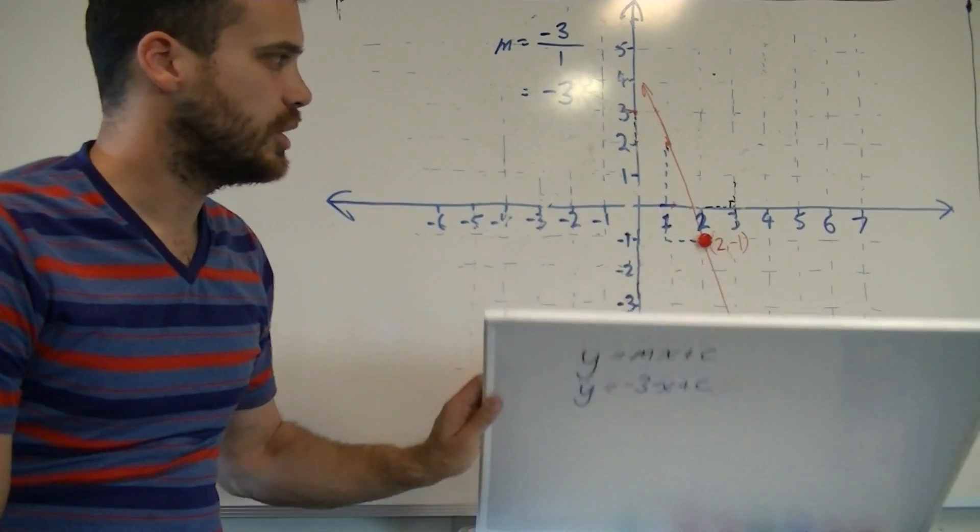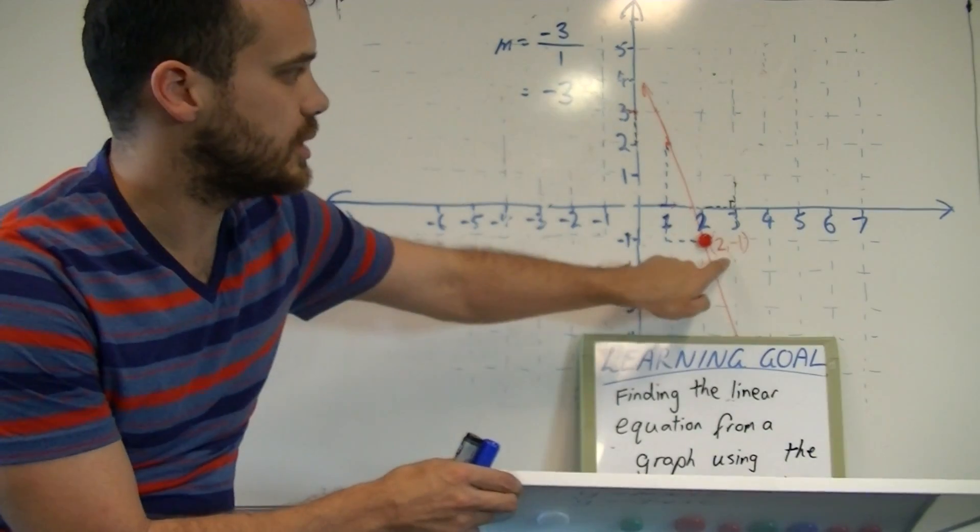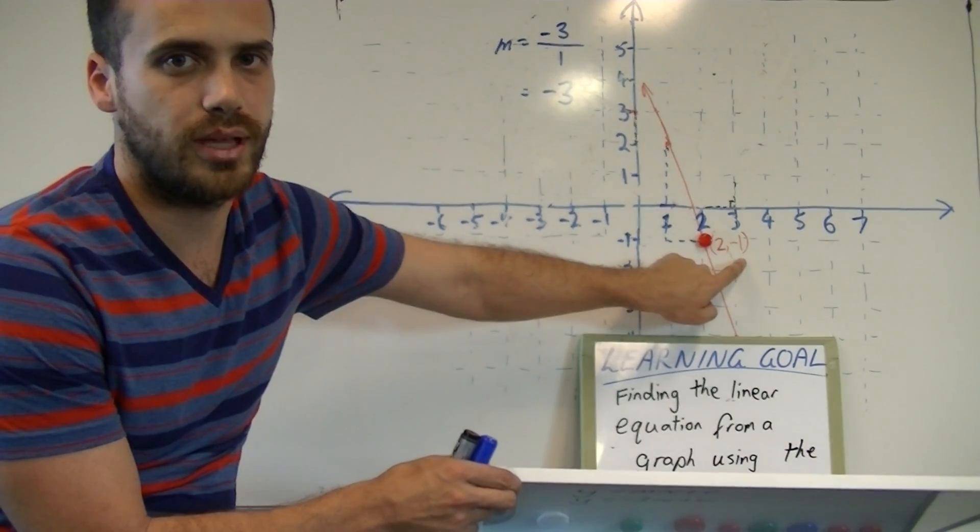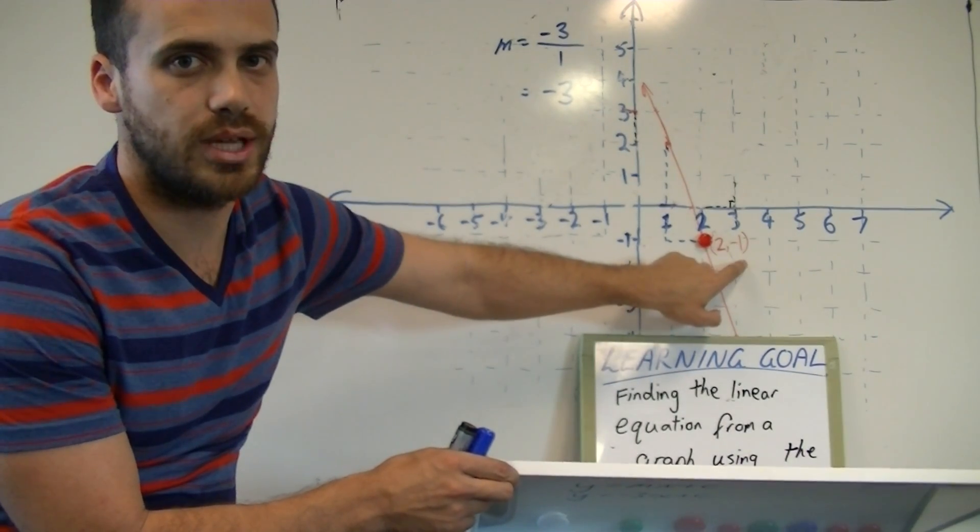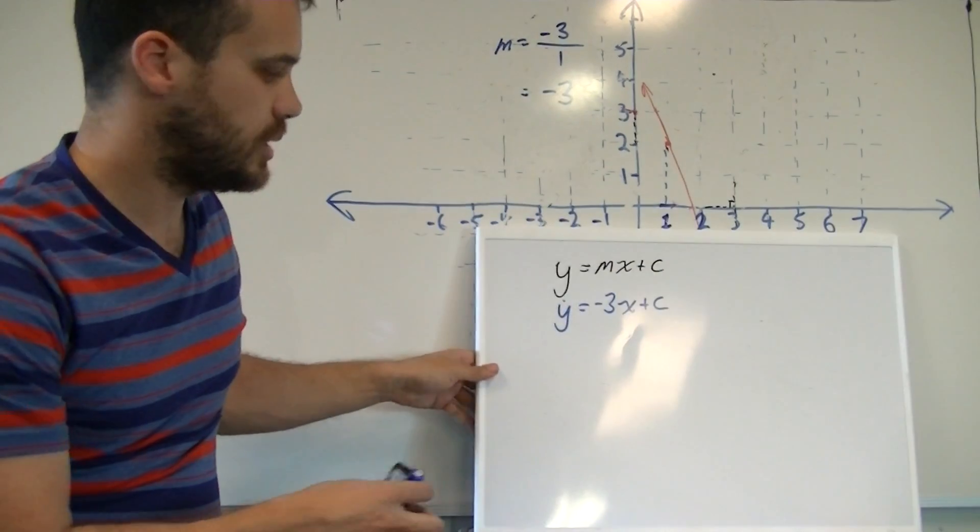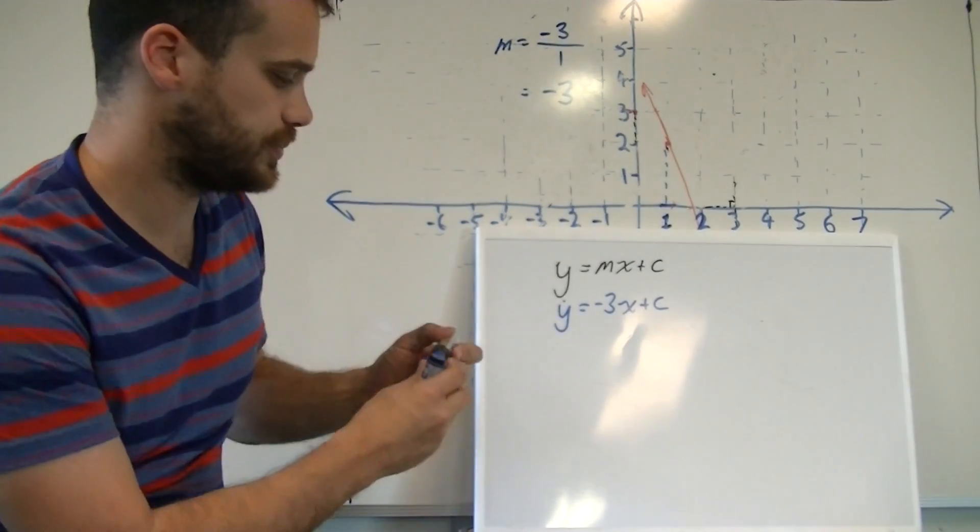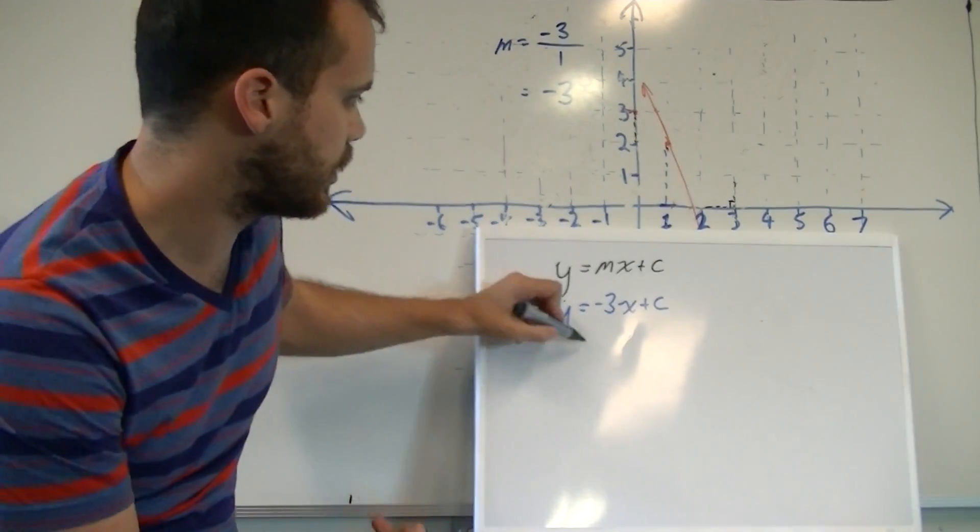We can't go to the c value directly because we don't know what our y intercept is. We do, however, know that one of the points is 2, negative 1. That means that when x equals 2, y equals negative 1. Now we can sub that point into our equation.